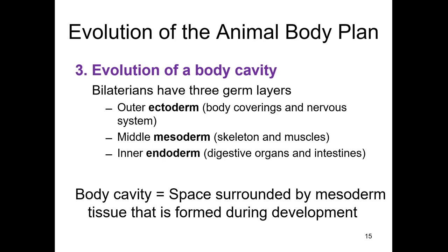The body cavity is what you would have to cut through the skin and ribs to get into — where your heart and lungs are, or your abdominal space. All of the animals that have a body cavity are bilateral and triploblastic. Bilateral animals all have endoderm, ectoderm, and mesoderm.